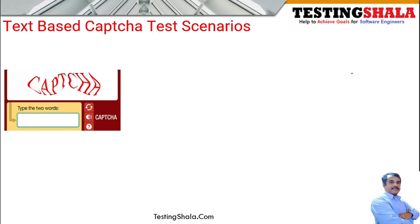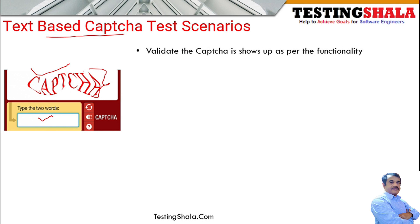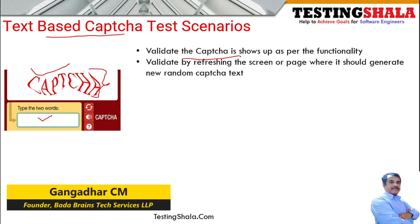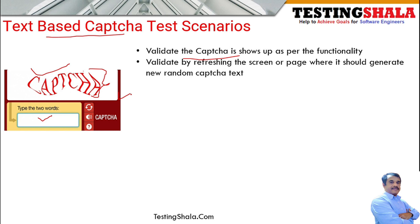The next type is text-based CAPTCHA, where text is displayed and the person must read it and enter it into the provided field. The first test scenario is to validate that the CAPTCHA is displayed as per the required functionality. The second scenario is that when the page is refreshed, the CAPTCHA should also reload with a new, different CAPTCHA text.